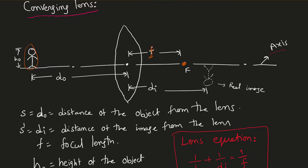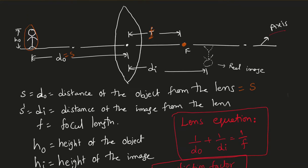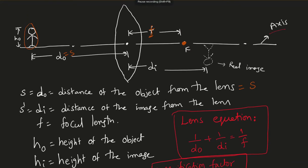In some textbooks, instead of D_o, the notation S is used — so either S or D_o is the distance of the object from the lens. S prime or D_i is the distance of the image from the lens. The image shown here is inverted. F is the focal length, H_o is the height of the object, and H_i is the height of the image.